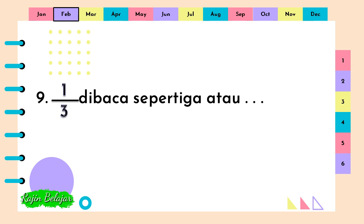Pecahan berikut dibaca sepertiga atau titik-titik-titik. Jawabannya adalah satu per tiga.